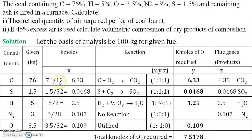Carbon has a molecular weight of 12. So divide 76 by 12; you will get the answer in kilomoles. Similarly, for sulfur the molecular weight is 32, so divide by 32. For hydrogen the molecular weight is 2, for nitrogen it is 28, and for oxygen it is 32. By dividing, you get all quantities in kilomoles.